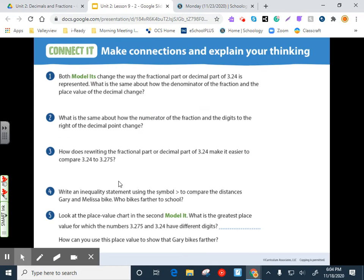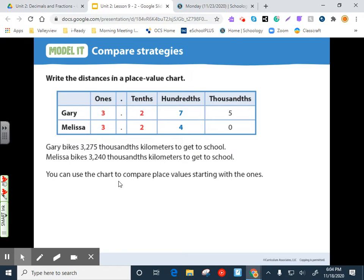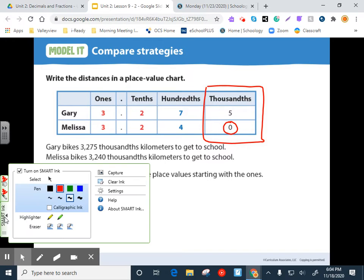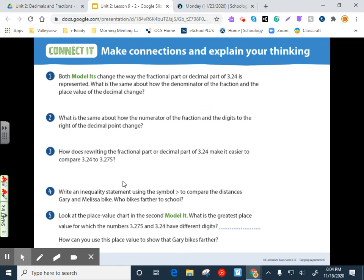So, alright, glance over to the page on the right, page 173. Both models changed the way the fractional part or decimal part of three and twenty four hundredths is represented. And what they're talking about is notice they've got a zero here that wasn't in the original problem. They added that so you would have these to compare if we needed to. But that's something we're not really going to focus too much on.